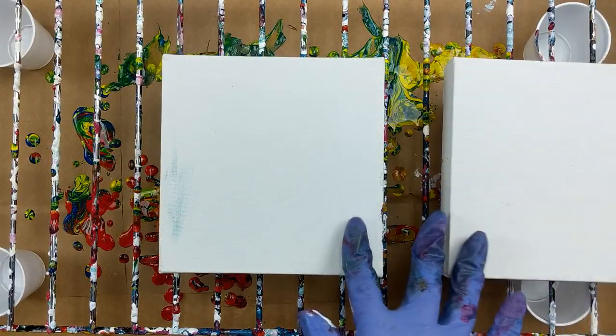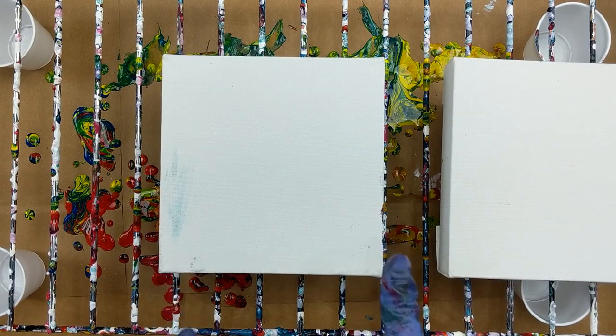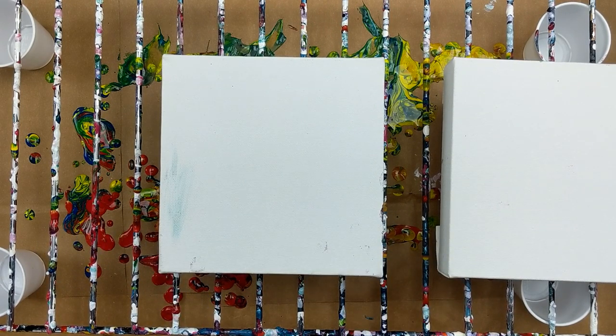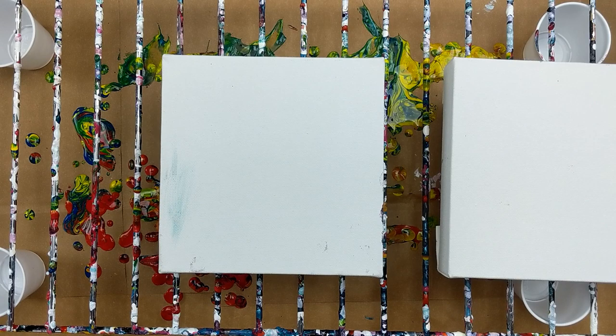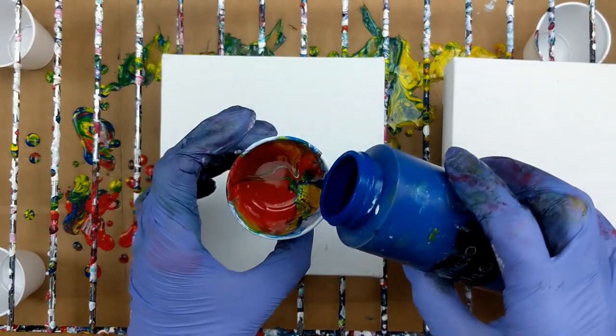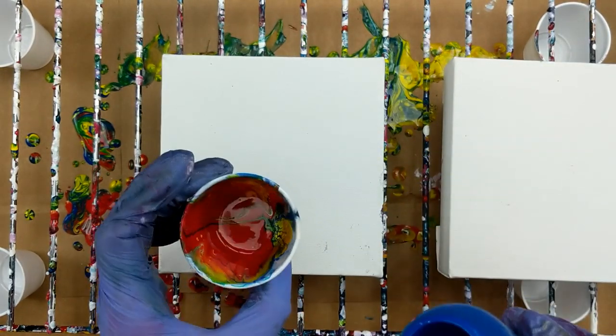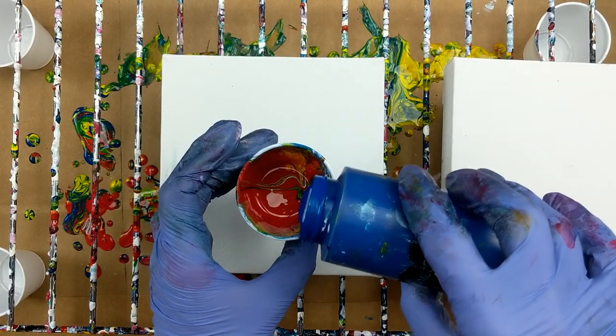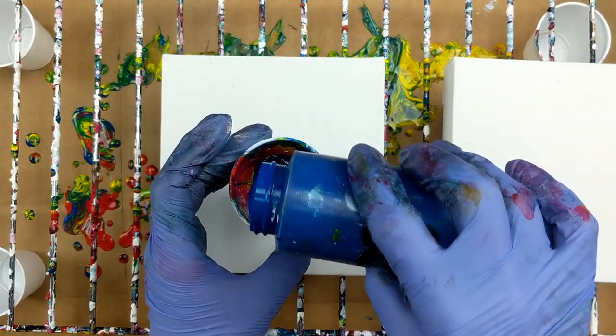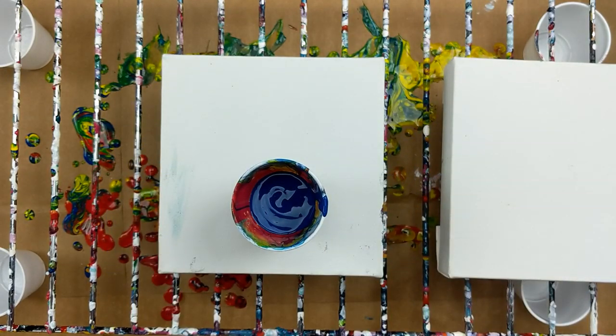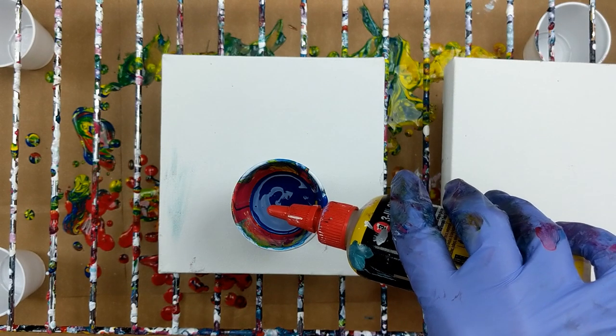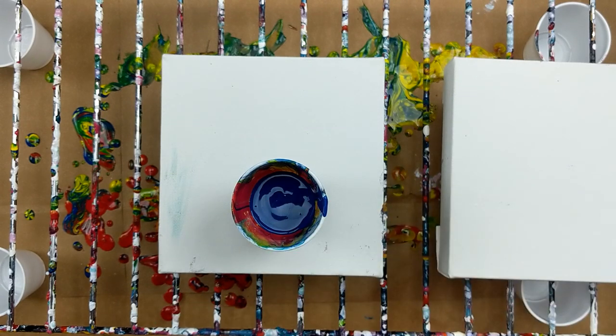Alright, so now I've got two more and I'm going to do a ribbon pour on this one. I'm just going to use one of the cups that I already used and I'm going to start with this one is the silicone cup. I'm going to mix up the order a bit and I think I'll put another two drops is good.